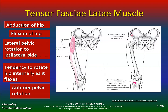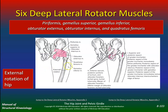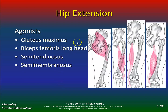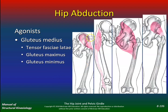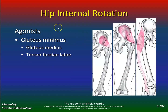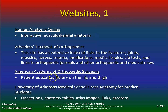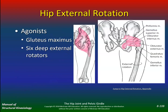Gluteus minimus: abduction of the hip, lateral pelvic rotation. Tensor fasciae latae — the one you love to foam roll: abduction of the hip, flexion of the hip, lateral pelvic rotation, with a tendency to rotate the hip internally as it flexes. The six deep lateral rotator muscles — you definitely want to know these: piriformis, superior gemelli, obturator internus, obturator externus, quadratus femoris, and gemelli inferior.